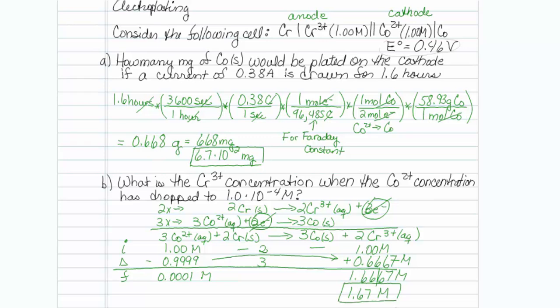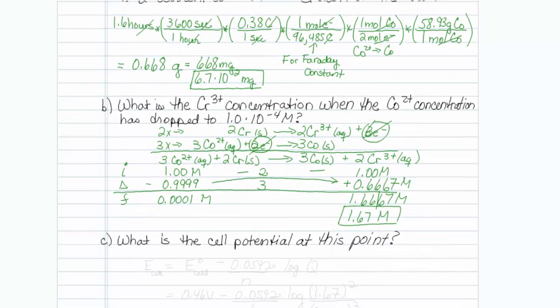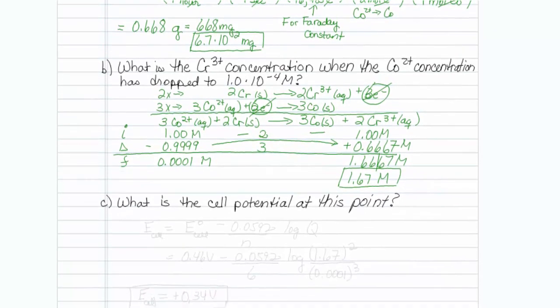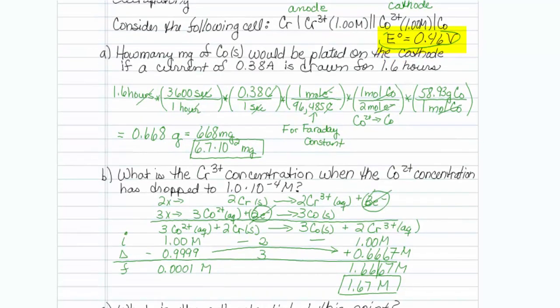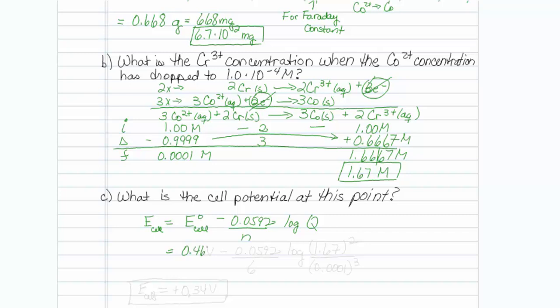The last question asks us: what is the cell potential at this point? Time to whip out that Nernst equation. E is equal to E dot minus 0.0592 over N log of Q. E cell, I was given the standard state. That is 0.46 volts. My electrons transferred is 6 from my balanced reaction.